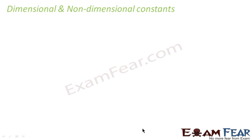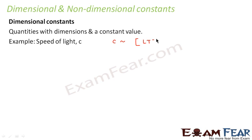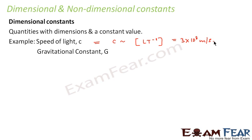Let us now study dimensional and non-dimensional constants. There are certain quantities which have dimensions but a constant value — for example, the speed of light. The speed of light has the dimension of speed, L·T⁻¹, but always has the constant value of 3×10⁸ metres per second. Similarly, the gravitational constant G always has a constant value but also has a dimensional formula.